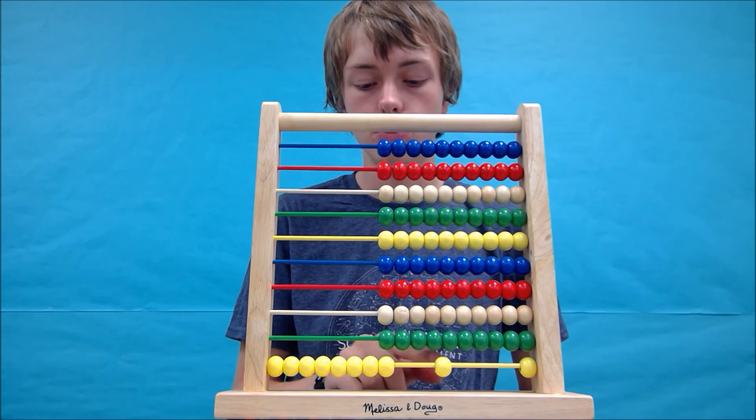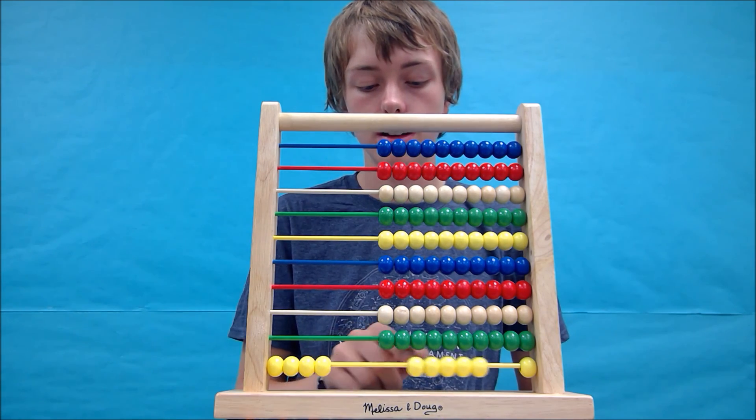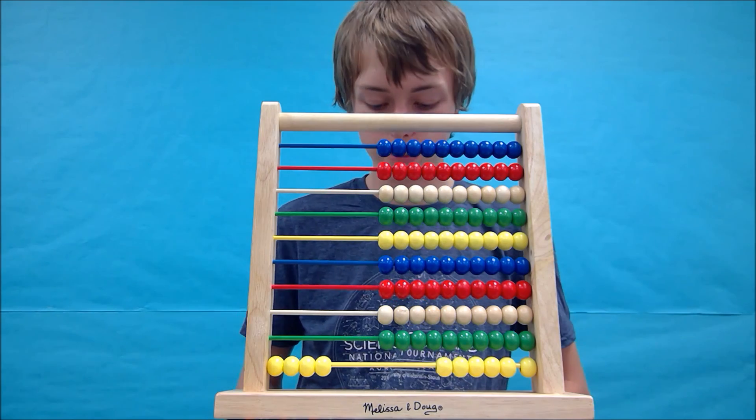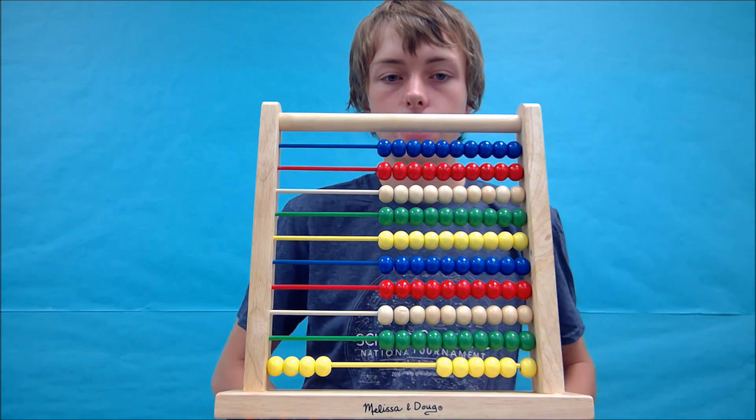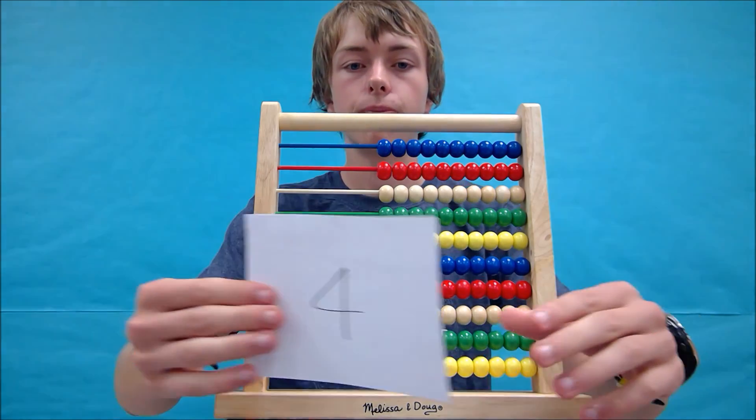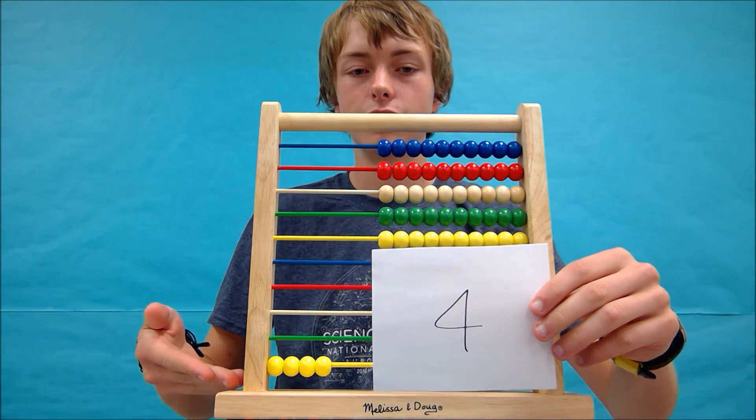We're going to take away 5 beads: 1, 2, 3, 4, 5. 2, 4. So the number we have left is 4. I wrote it down again. It's a good practice to get into, but not always necessary. 4 is our answer. These are our beads.